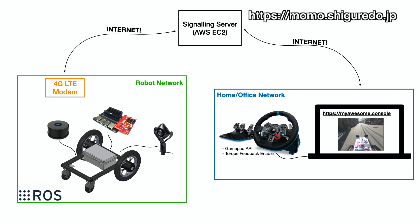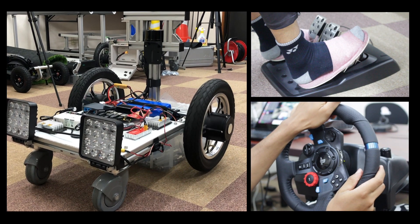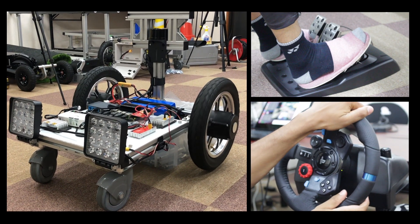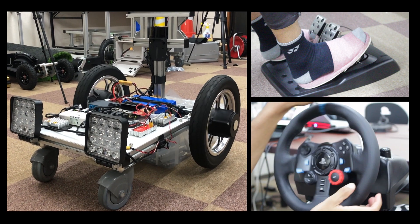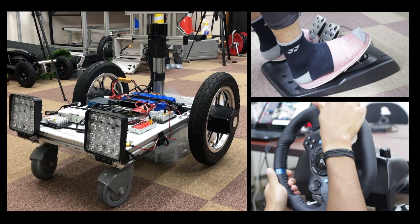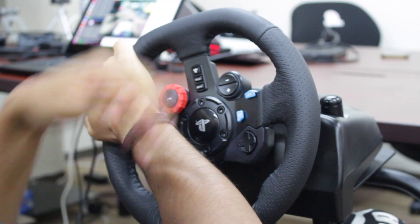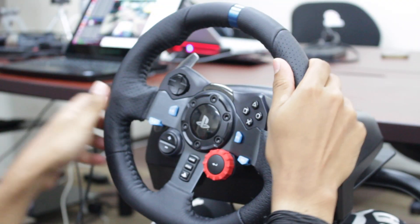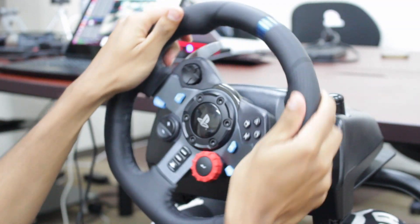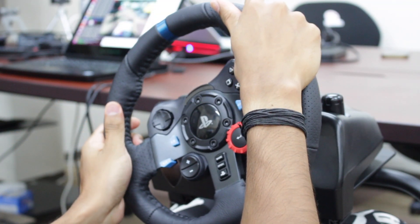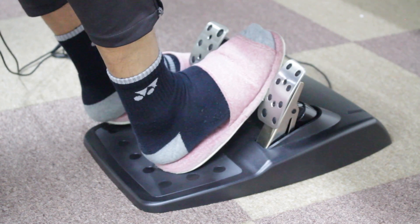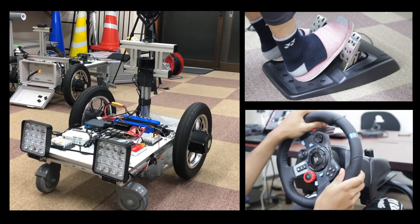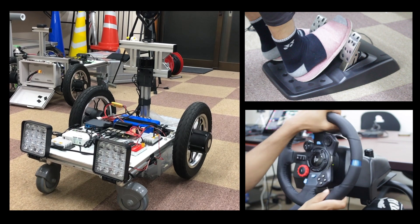Once the connection between the robot and user is established, that is the magic moment. The camera on the robot will be streaming to the console, while the data channel brings all the movement of the steering wheel to use for robot control. We are using ROS for ease of communication between nodes and passing data from the console. To move the AT car, we need to send an S-Bus command topic consisting of S-Bus steering and S-Bus throttle values.